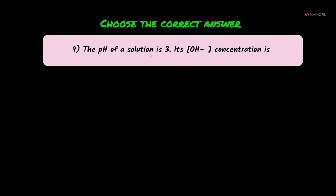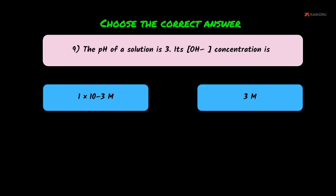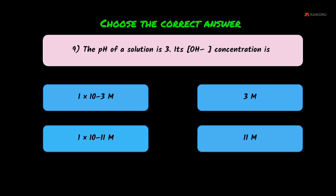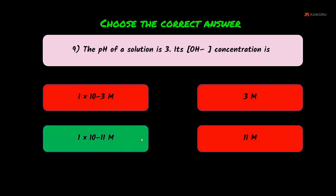Ninth question: the pH of a solution is 3. What is its OH⁻ concentration? Using the pH calculation we already know, if pH is 3, we can find the OH⁻ concentration. The answer is option C: 1 × 10⁻¹¹.